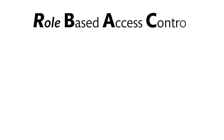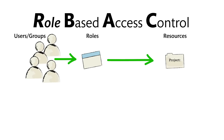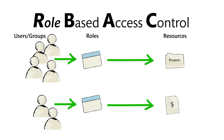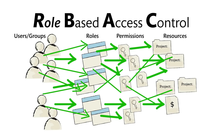Under a role-based system, the organization would create a role to represent general access to files for team members and a second role for the privileged access that auditors need to view sensitive financial information. Each role would then need to be assigned the appropriate permissions. System administrators go through this role and permission process every time they take on a new client.